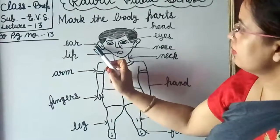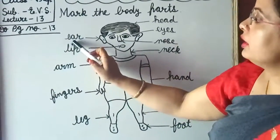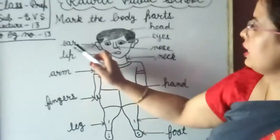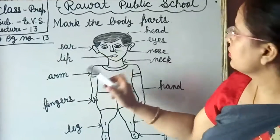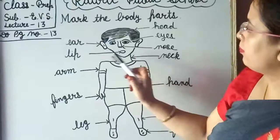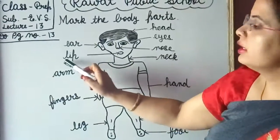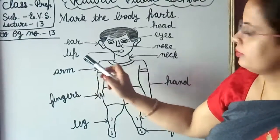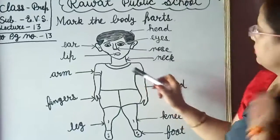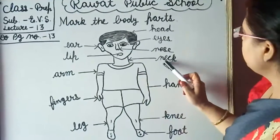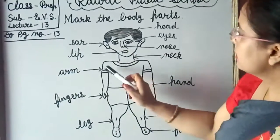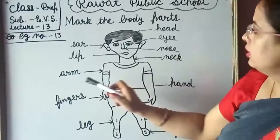This is our ear. E-A-R, ear. This is our lip. L-I-P, lip. This is our neck. N-E-C-K, neck.